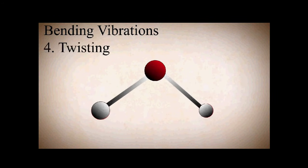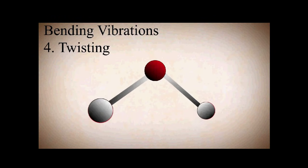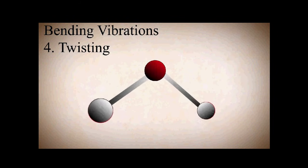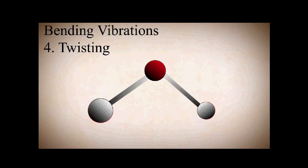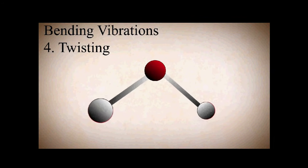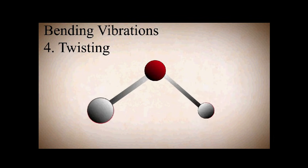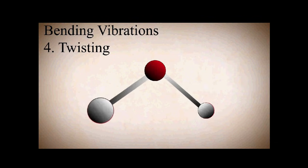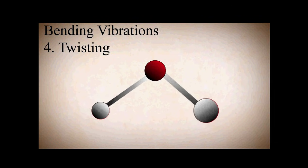Similarly, twisting vibration is also an out-of-plane vibration. Here one atom is coming towards us and the other atom is going far from us, which is why twisting vibration is out of plane. Due to all these six vibrations, molecules vibrate and absorb energy in infrared spectroscopy.